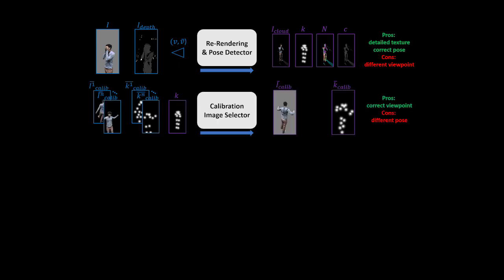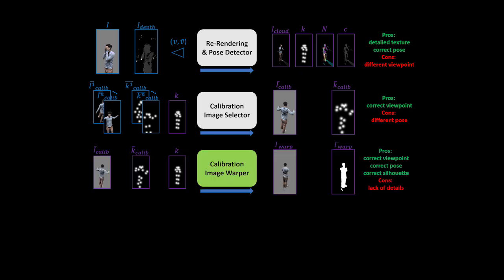Second, a calibration selector picks a good calibration image by looking at similarities in both viewpoint and pose. Third, a learned warping module aligns the selected calibration image with the target pose.